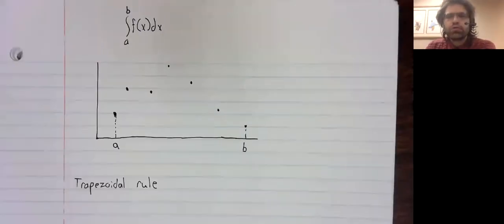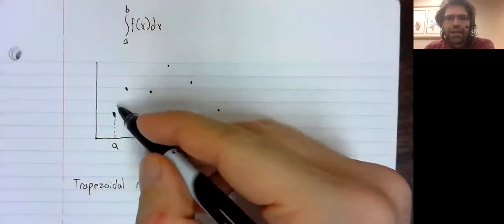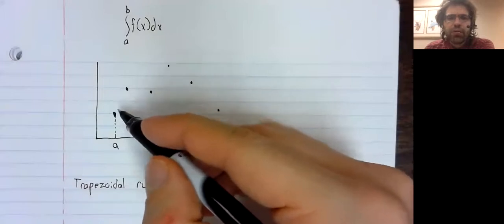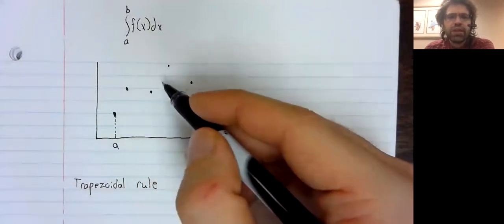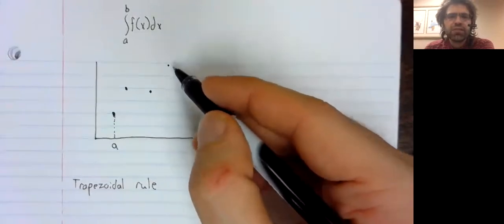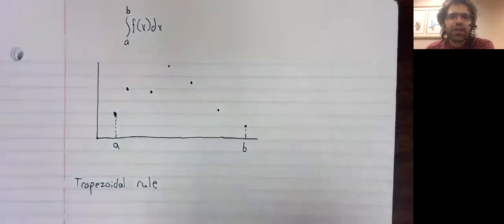The trapezoidal rule works as follows. We don't know anything about what the function is doing between these points. Lacking any actual data, we might as well assume that it's linear.